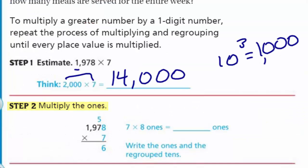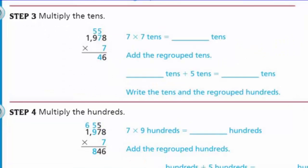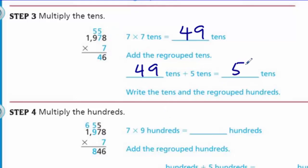Step 2 — multiply the ones: 8 times 7 is 56. We put the 6 down below and carry the 5 over into the tens place. We regrouped — we wrote the ones and the regrouped tens, so the 5 gets carried over. Step 3 says multiply the tens: 7 times 7 is 49, so that's 49 tens. But I have 5 regrouped tens up above. So 49 tens plus the 5 gives me 54 tens. I can't put 54 down below — I have to regroup again. So I put my 4 down below and carry my 5 into the hundreds place.